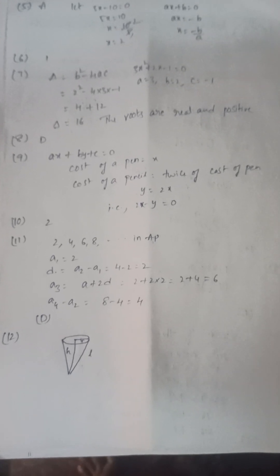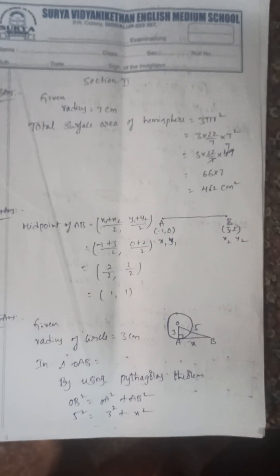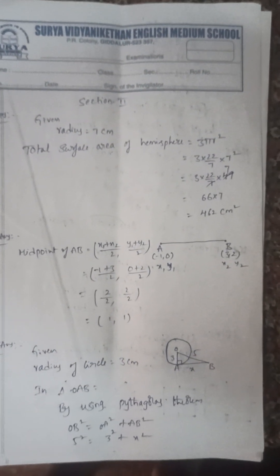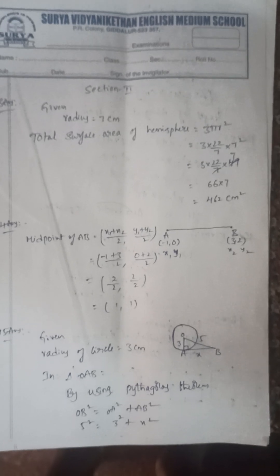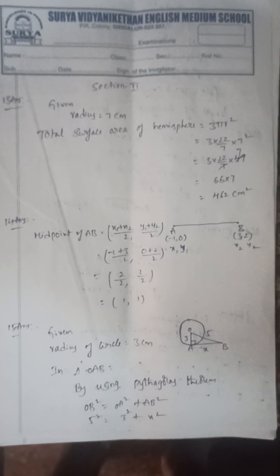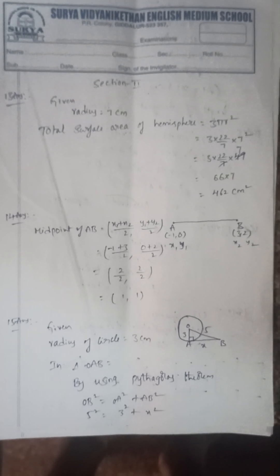Fifth one, sixth one, seventh one discriminant. Next, eighth one D option, ninth one, tenth one, eleventh one, twelfth one. So, two more questions: first one, total surface area of hemisphere with radius 7, that is 462. Next, midpoint of AB is (1, 1). Next, length of the tangent—by using Pythagoras theorem we can get 4.